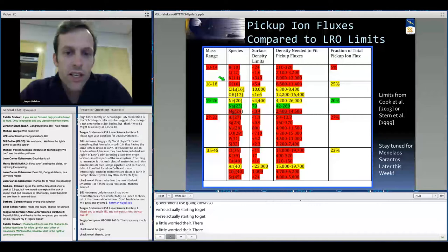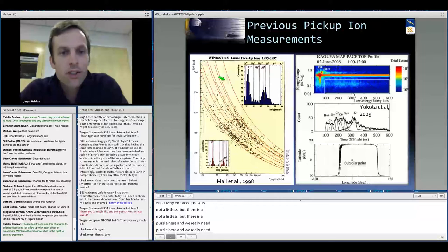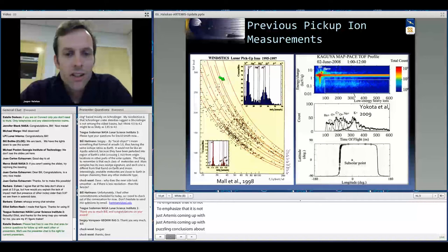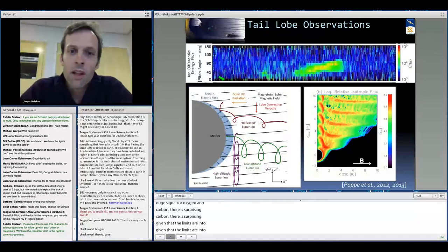Now, there are a lot of ways out of this conundrum. There may be spatial variations. LRO is looking on the night side. We're looking on the day side, effectively. There may be species not on this list, but there's a puzzle here, and we really need LADEE to help us out with this. Just to emphasize that it's not just Artemis that is coming up with puzzling conclusions about the pickup ions. Here's some older measurements from Wind and actually a not so old measurement from Kaguya, and you can see some interesting things here, like a huge signal from oxygen, some oxygen and carbon. Very surprising given that the limits on carbon and oxygen now are into the single digits for density. There's really something interesting going on here, and we really need to see what LADEE is going to tell us.